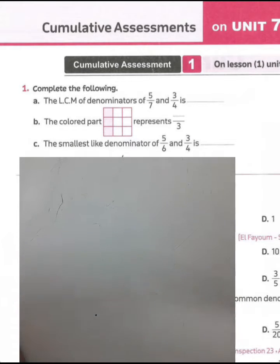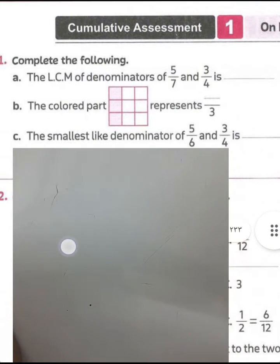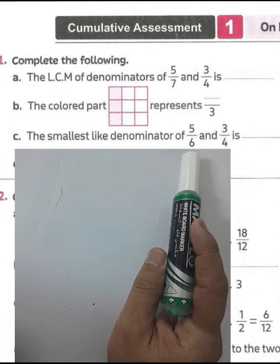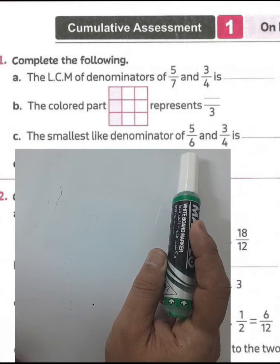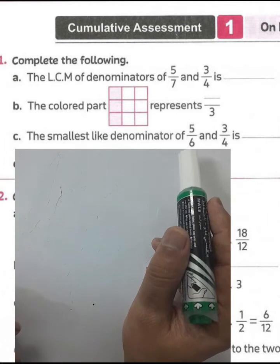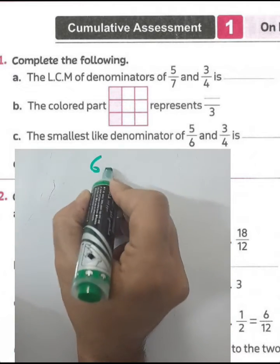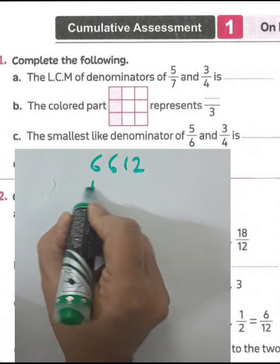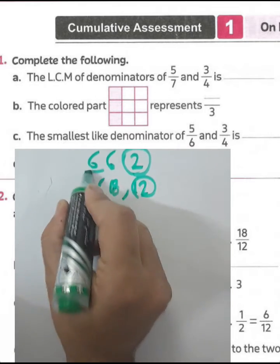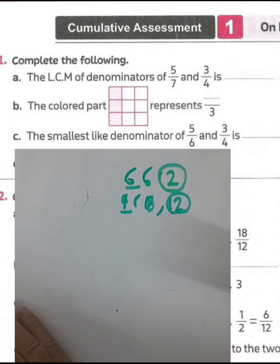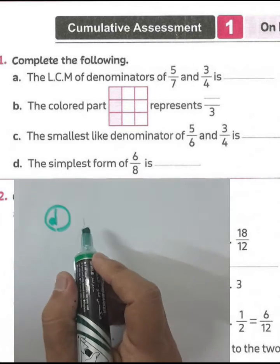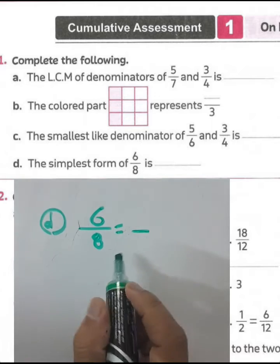Letter C: find the smallest like denominator of six and four. Six cannot be divided by four, so we add six to itself — six plus six equals twelve. Twelve is the least common multiple of six and four, because twelve can be divided by four. Alternatively: list multiples of six (6, 12) and multiples of four (4, 8, 12) — both reach twelve.